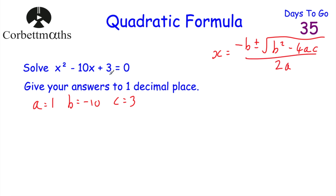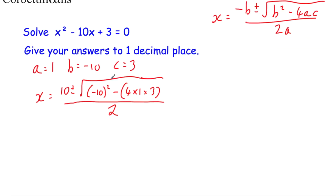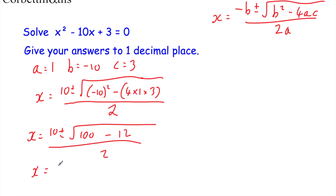Now we're going to substitute our values to find x. x equals negative b — now b is already negative, so negative b will be positive — that's 10, plus or minus the square root of b squared, which is negative 10 in brackets squared, minus, in brackets, 4 times a which is 1 times c which is 3, close brackets, all divided by 2a. a equals 1, so 2a is 2. So x equals 10 plus or minus the square root of: negative 10 squared minus, in brackets, 4 times 1 times 3, close brackets, all divided by 2. Now negative 10 squared is 100, and 4 times 1 times 3 is 12, so we get the square root of 100 minus 12, which is 88, all divided by 2.